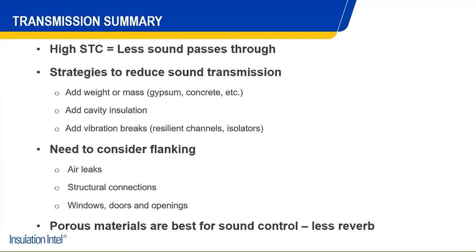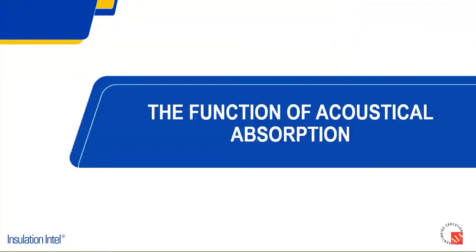In summary for sound transmission: high STC means less sound gets through. Strategies to reduce sound transmission include adding weight or mass — dense boards are a very effective method of improving STC ratings. Adding cavity insulation is another fairly cost-effective method. Vibration breaks, resilient channels, and isolators can be very effective if done correctly. Need to consider flanking: air leakage is a big one, as are structural connections. More porous materials like brick and concrete — with all those little holes creating more surface area — do better at minimizing sound transmission.